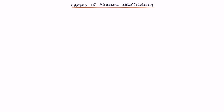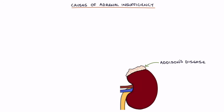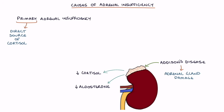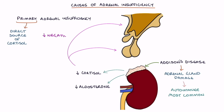Next let's talk about the causes of adrenal insufficiency. Addison's disease refers specifically to when the adrenal glands have been damaged, resulting in reduced cortisol and aldosterone secretion. This is called primary adrenal insufficiency — it's primary as the problem is with the direct source of the cortisol, the adrenal glands. The most common cause is autoimmune, where the immune system inappropriately attacks and damages the adrenal glands. Low cortisol means reduced negative feedback on the hypothalamus and pituitary, leading to increased CRH and ACTH.